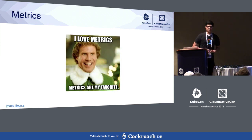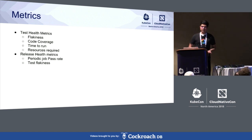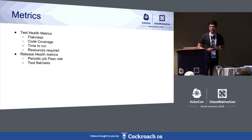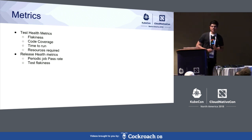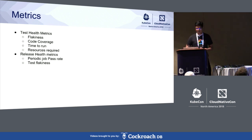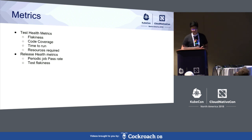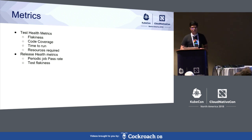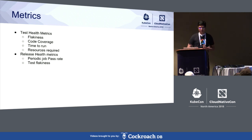We need actionable metrics. For test health, we look at test flakiness, how much tests are passing or failing, code coverage — we have a PR job that checks code coverage — the time to run the test, and the resources needed. For release health, we have a periodic job that automates all our releases, and we look at how the job is doing, what tests run with releases, their flakiness rate, and how much time releases take to complete.